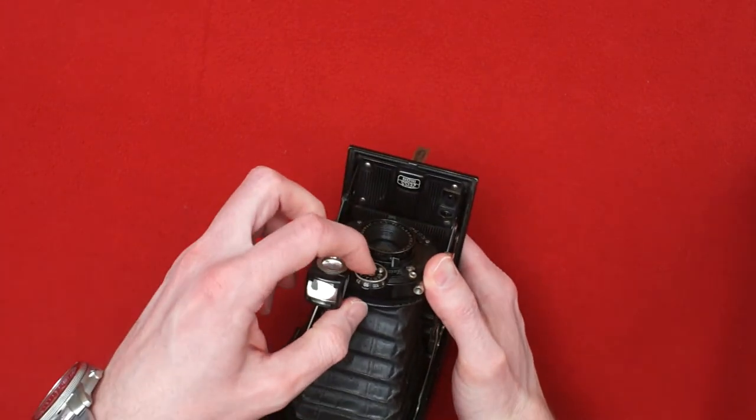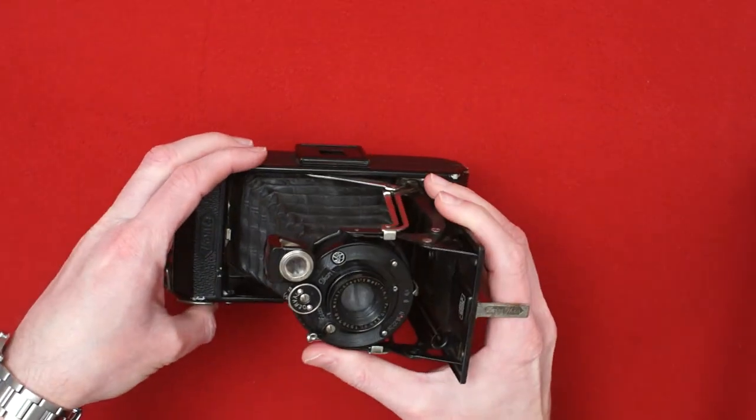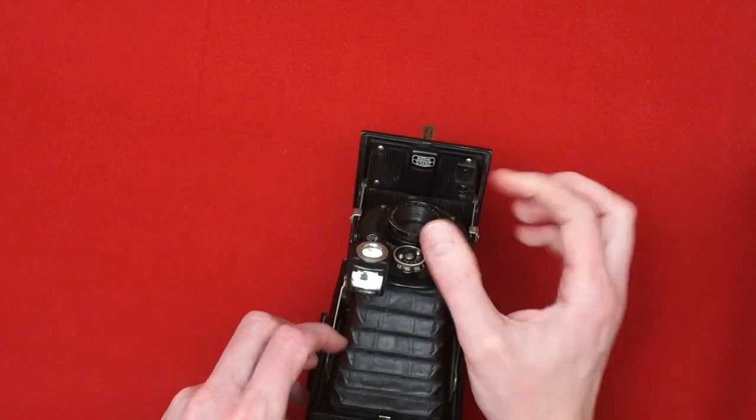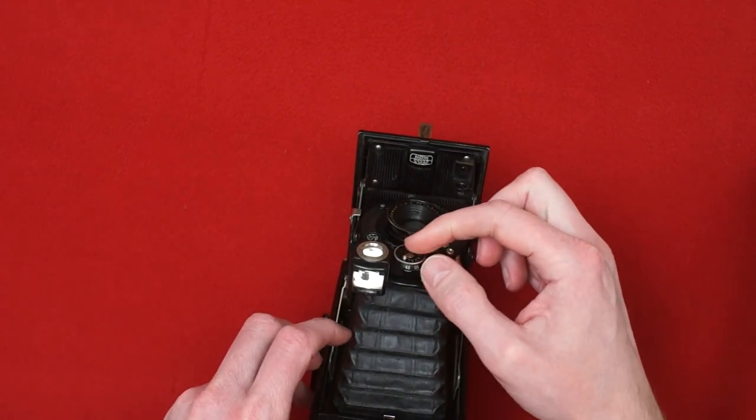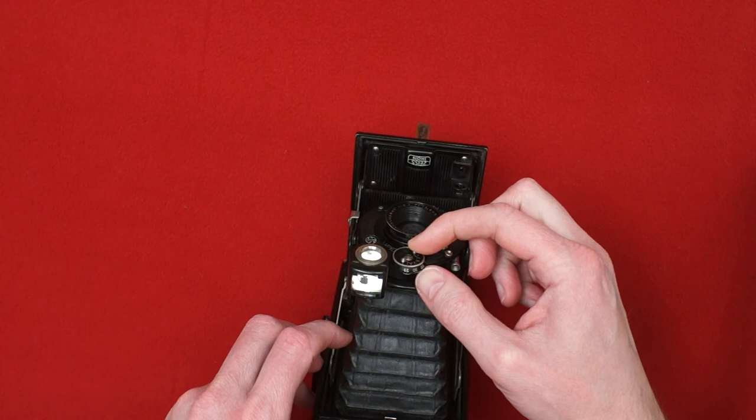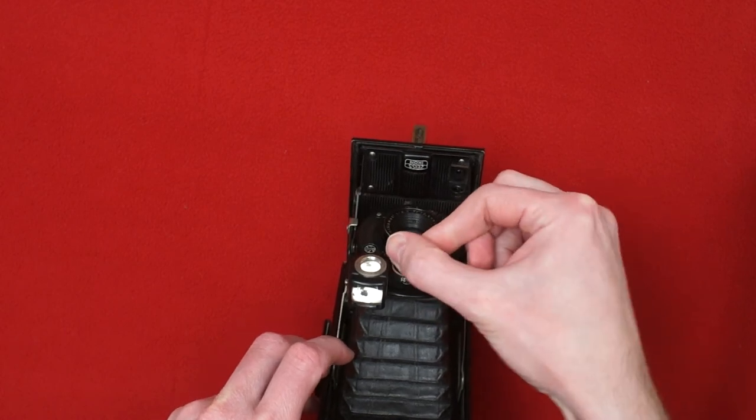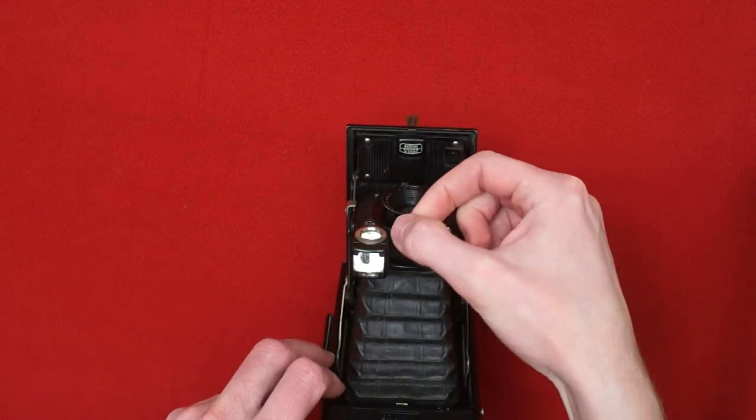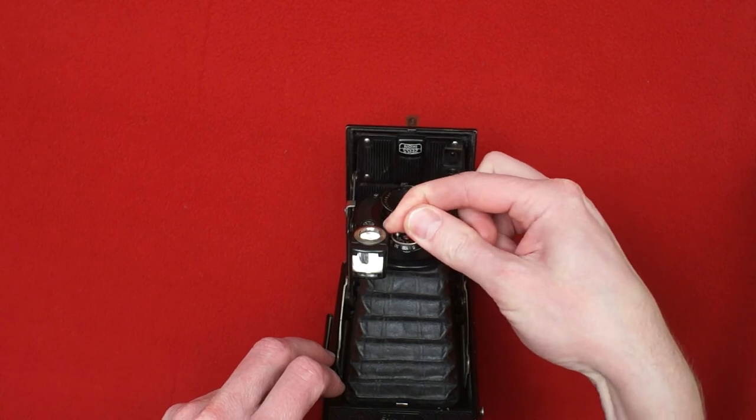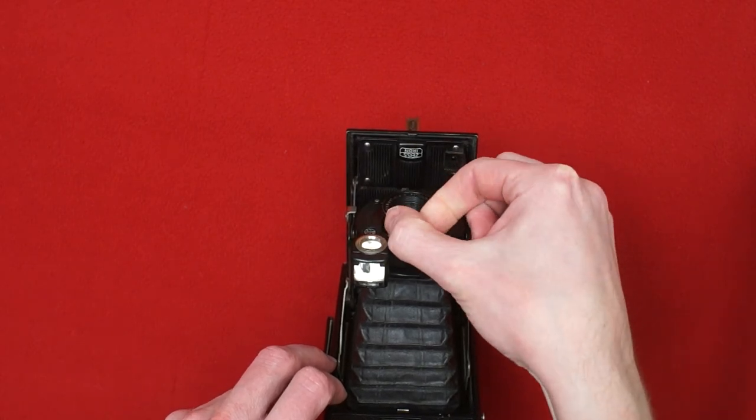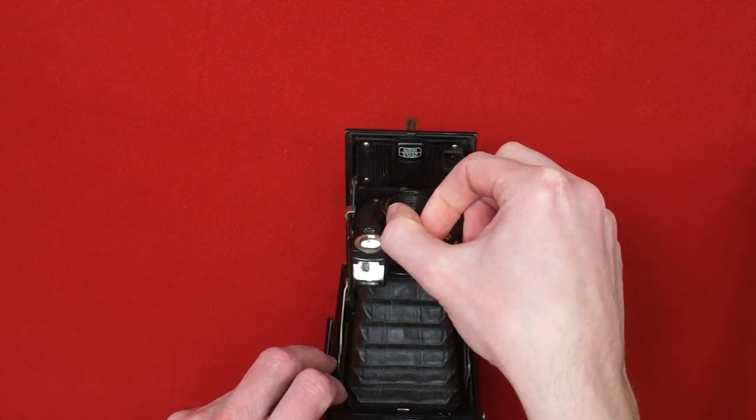The shutter is a Vario shutter. It has only three time speeds: 1/25 of a second, 1/50 of a second and 1/100 of a second. There is also bulb mode and there is a time mode.